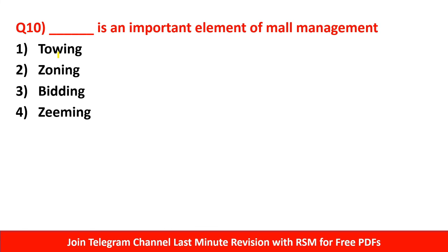The last question: What is an important element of mall management — towing, zoning, bidding, or zimming? In a mall, everything is systematically divided. For example, the third floor usually has a multiplex, food court, and gaming zone, while ground and first floors have clothing and other shops. This is strategic — someone going to the multiplex on the third floor passes through lower floors, notices nearby shops, and may shop there. This systematic division is called zoning. The right answer is zoning.